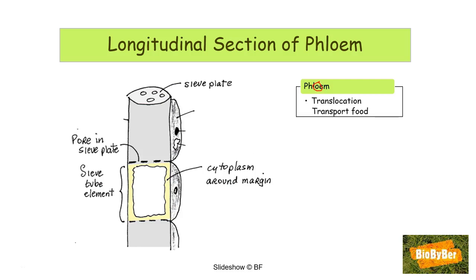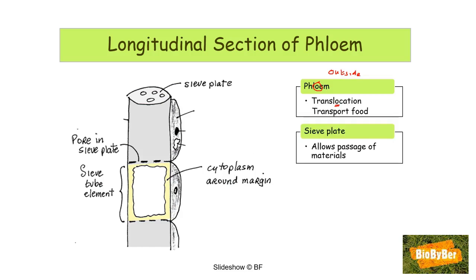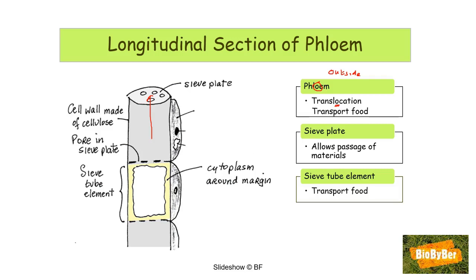In a nutshell, the function of phloem is translocation or transport of food. Remember: O in food, O for outside — phloem vessels are found on the outside of the vascular bundles in a dicot stem — and O in translocation. The sieve plates allow the passage of materials; they are aligned to form a continuous tube through which food can be transported. The cell wall of the sieve tube elements is made of cellulose, a complex carbohydrate. Phloem does not have lignin.